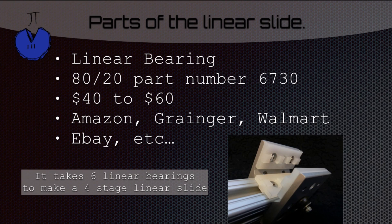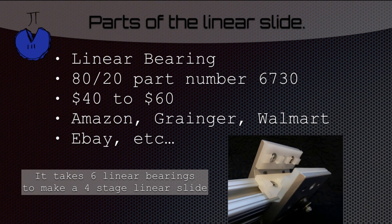When buying the parts needed for the linear slide, the linear bearings' 80-20 part number is 6-7-30. They cost anywhere from $40 to $60, so they're not that cheap. You can buy them on Amazon, Grainger, Walmart.com, or eBay — we bought ours on eBay. It takes six linear bearings to make a four-stage linear slide, which is the linear slide we're showing you in this video. So as you can see, it gets pretty pricey pretty quick.